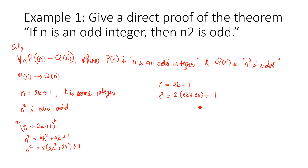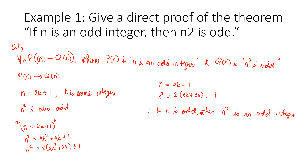Consequently, we have proved that if n is odd, then n² is an odd integer. This is a very straightforward direct proof that if n is an odd integer, then n² is also an odd integer.